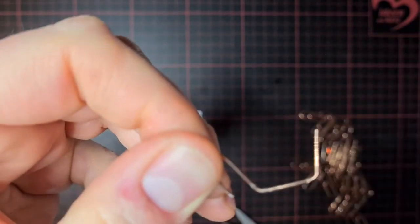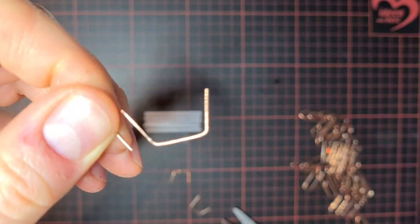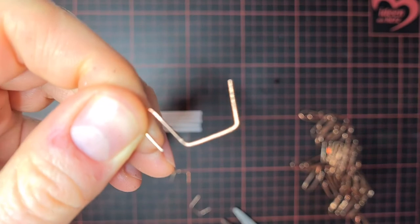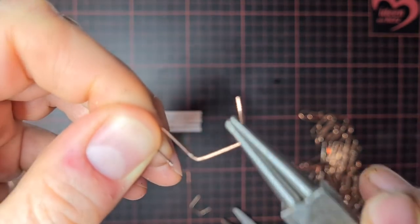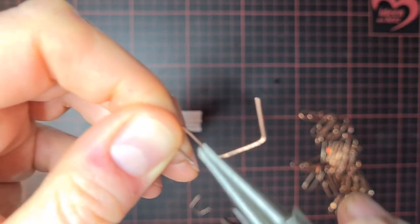A bending, like this. This side should be a bit longer than this side, so we cut off here.